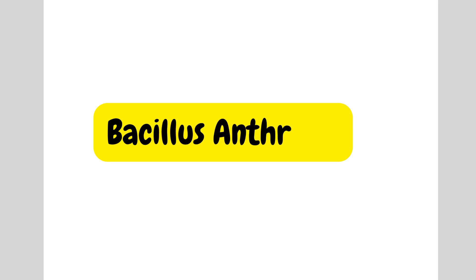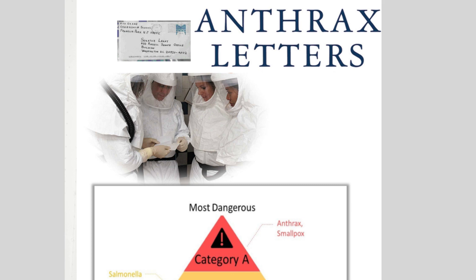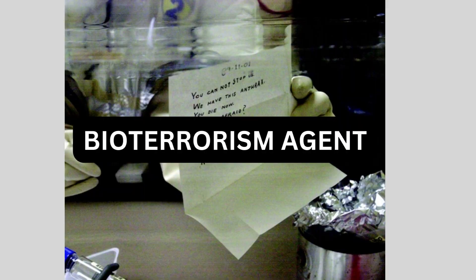Hello everyone, today we learn about Bacillus anthracis. It affects animals. Humans get infected through contact with an infected animal or by inhaling the spores. These spores are very, very tiny — you cannot see them with your naked eye — and thus it is used as a bioterrorism agent.